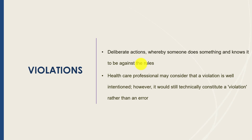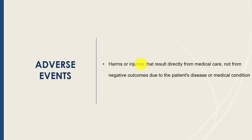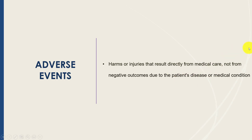Adverse events and near misses are also important concepts. Adverse events are harms or injuries that result directly from medical care — you must differentiate this from a bad outcome caused by the patient's underlying disease. If a patient has lung cancer or myasthenia gravis and experiences natural disease progression leading to a bad outcome, that's not an adverse event in this context. An adverse event is when harm or injury is a direct result of medical care, not of the patient's diagnosis.